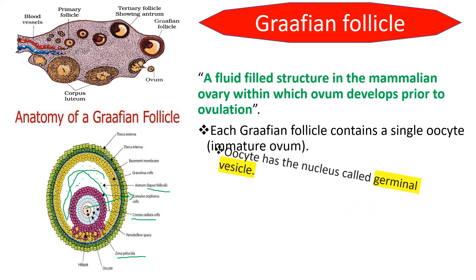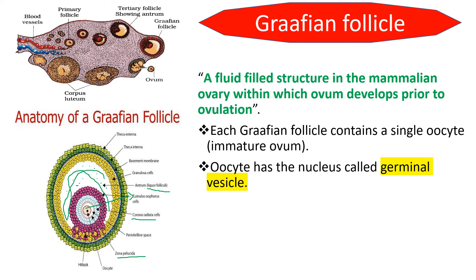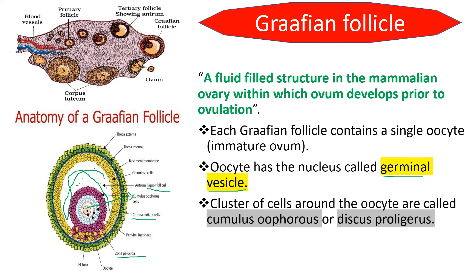That covers the parts of the Graafian follicle. Each Graafian follicle has a single oocyte — that is, an immature ovum. In each Graafian follicle of the ovary, only one immature ovum is present. The oocyte contains one nucleus, and the nucleus in the Graafian follicle is called the germinal vesicle. The cluster of cells around the oocyte is called the cumulus oophorus, which is also called the discus proligerus — both names refer to the same structure.